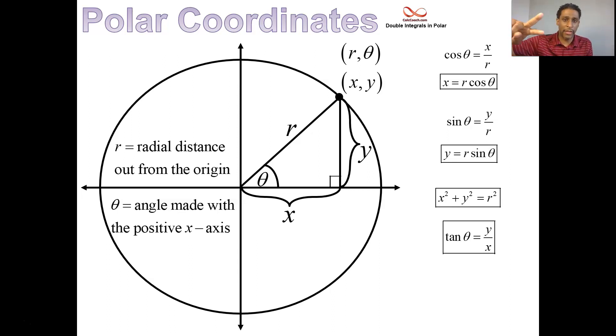We're going to use the two that are in the box, the first two, X equals R cosine theta and Y equals R sine theta, to be able to calculate the Jacobian when we switch into polar. Let's do it on the next slide here.